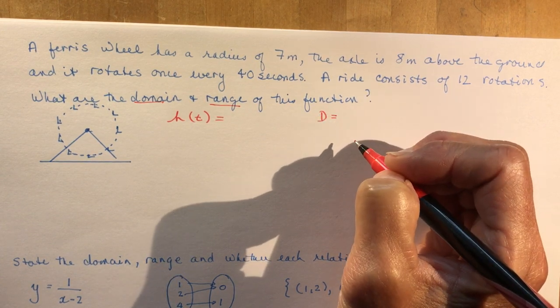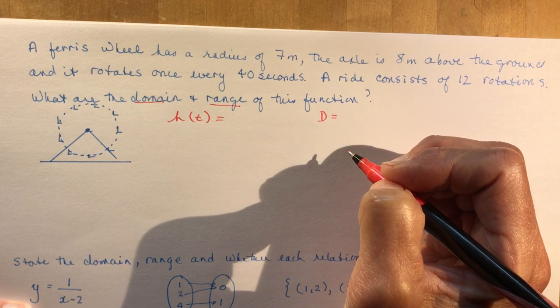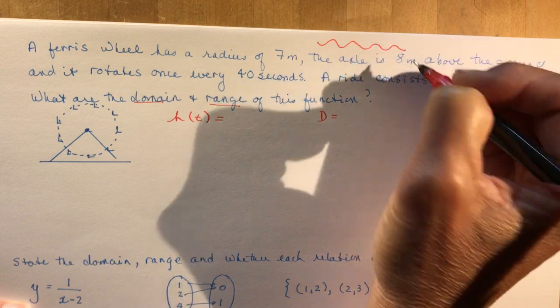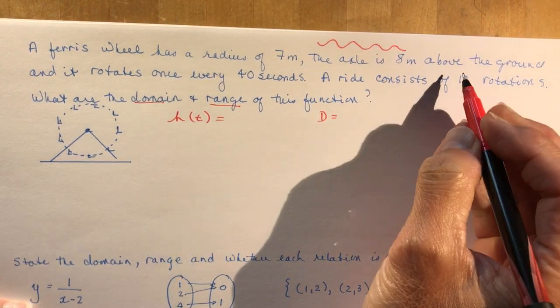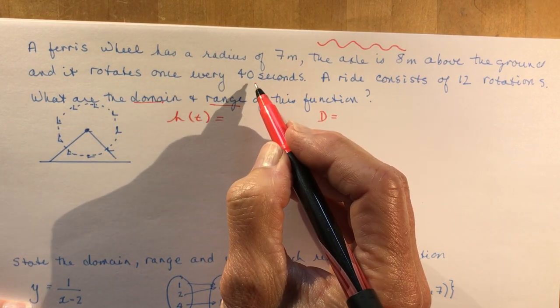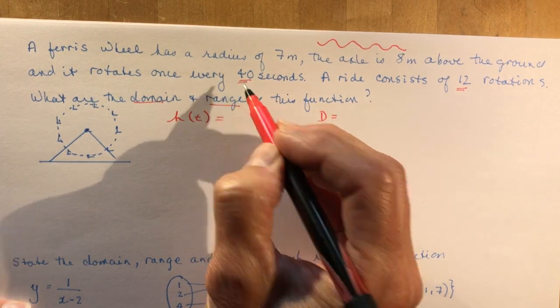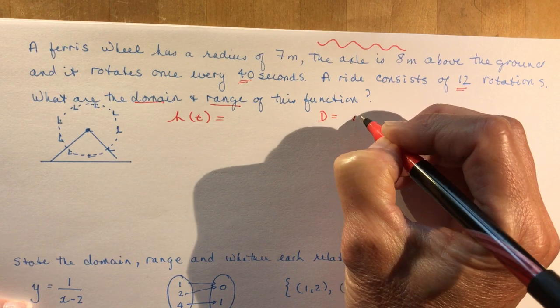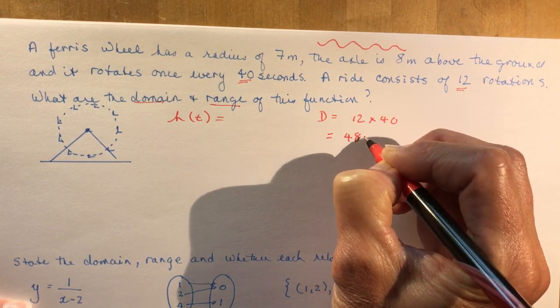Because as you know, if I said what's the domain of sine theta, you say well it goes on and on forever and ever. I mean I can draw sine theta forever and ever and ever. So this one has a restriction on it because it is a ride that has 12 rotations every 40 seconds.